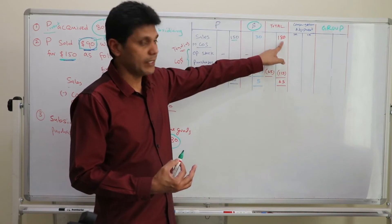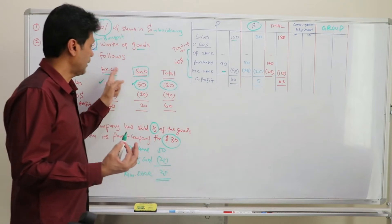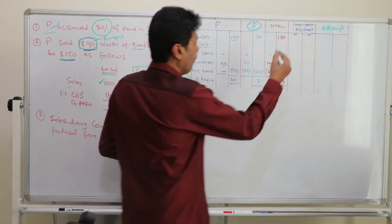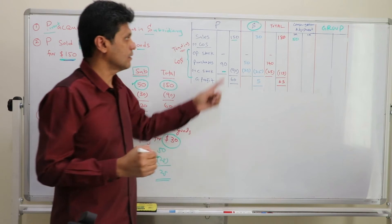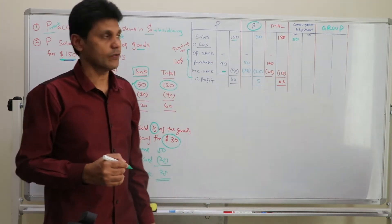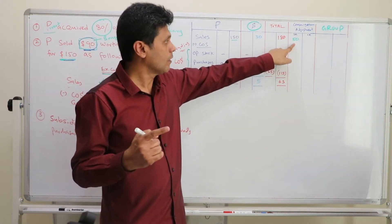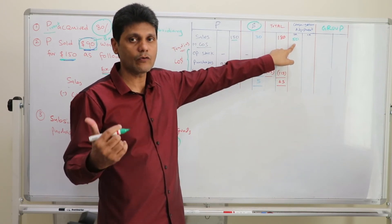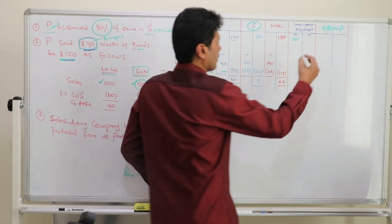On that basis, let's identify the group figures. We take $150 plus $30, which is $180, but this includes the intercompany transaction of $50 — the parent sold $50 worth of goods to the subsidiary company. So in the group financials, you need to remove this $50. You debit to remove it, as explained in the previous video. So $180 minus $50 gives group sales of $130.